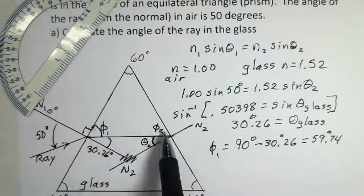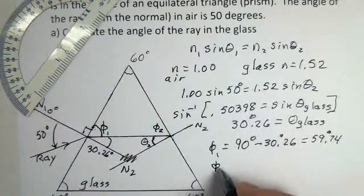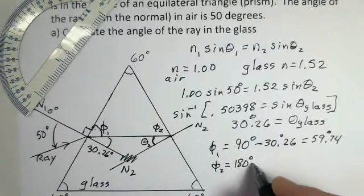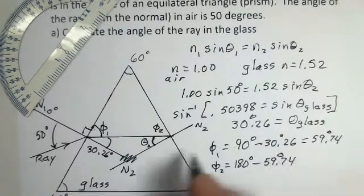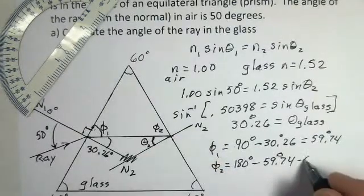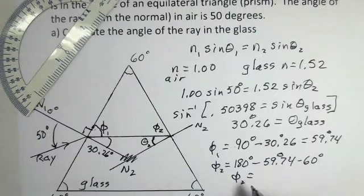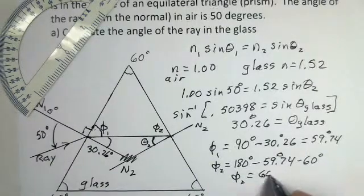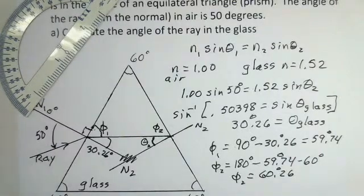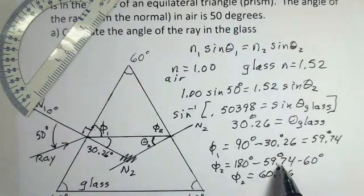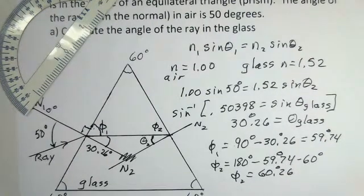So how do I get that? Well now we're in a triangle triangles have 180 degrees so this Phi 2 would be 180 degrees inside the triangle minus 59.74 that's Phi 1 minus 60 degrees that's at the top of the triangle so I find that Phi 2 Phi 2 has a value of 60.26 degrees and makes sense you know this angle is less than 60 this one 60 I need more than 60 for Phi 2.